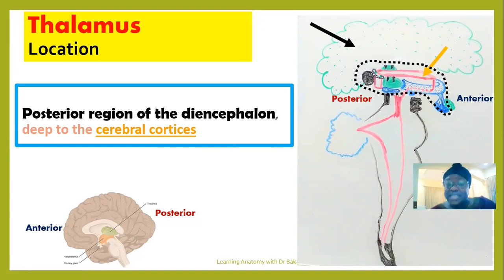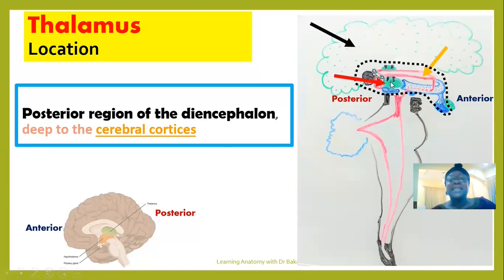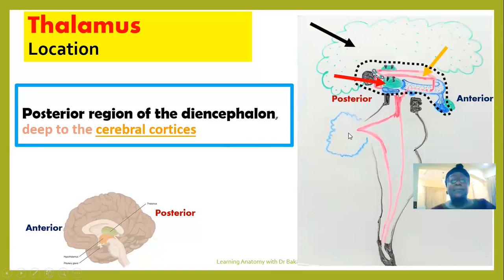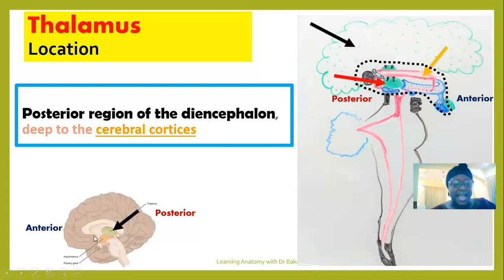Specifically, the thalamus is a structural component of the diencephalon located around the posterior part, deep to the cerebral cortices. This is where we have the cerebral cortex. The thalamus is specifically positioned at the posterior region of the diencephalon. The cerebellum is positioned around the posterior region as well. Viewed from behind, the thalamus is positioned around the posterior region of the diencephalon.